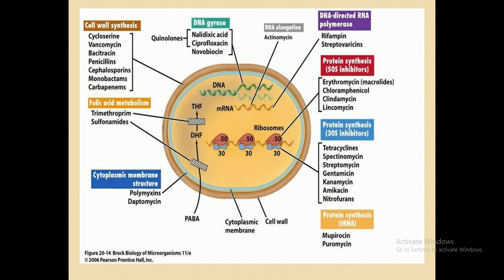Another antibiotic group includes trimethoprim and sulfonamides, which block folic acid synthesis. Folic acid metabolism is stopped by these agents, which are both bacteriostatic and bactericidal. They block the production of folic acid, through which the microorganism would otherwise survive. Related structures include the cytoplasmic membrane, polymyxin, daptomycin, para-aminobenzoic acid, and the cell wall.